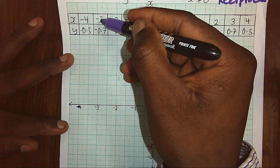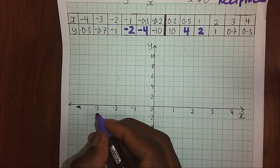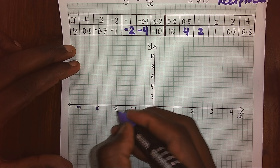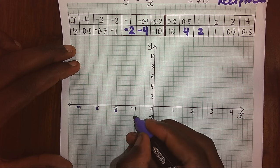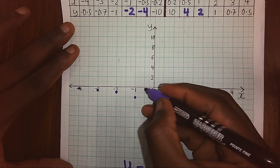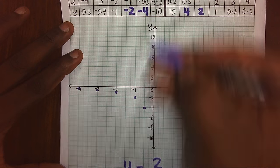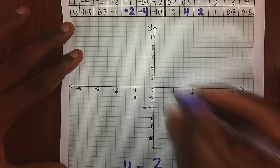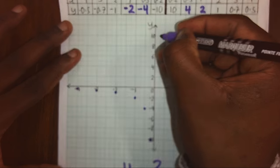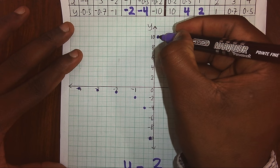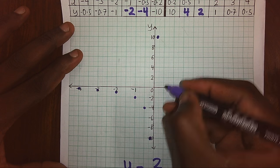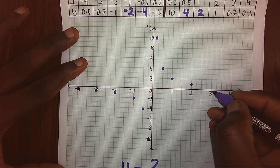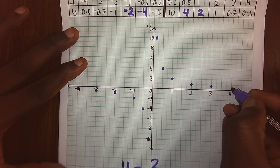At negative 3, I will have negative 0.75, which will be also close. At negative 1, I will go to negative 2. At 0.5, I will go to 4. At 0.2, I will go down to negative 10. I will continue on this side. At 0.2 on the positive side, it will come up to positive 10. At 0.5, it will be 4. At 1, it will be 2. At 2, it will be 1. At 3, it will be 0.7. And at 4, it will be 0.5.